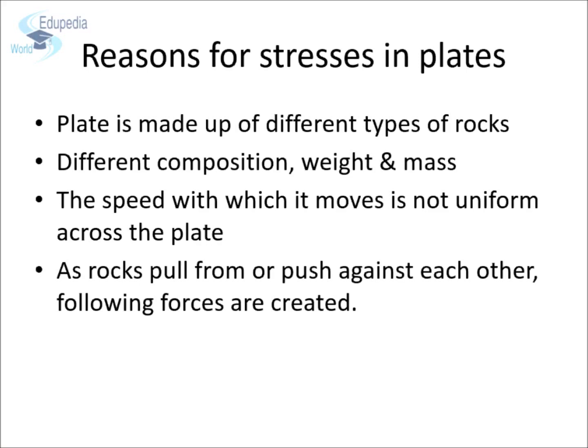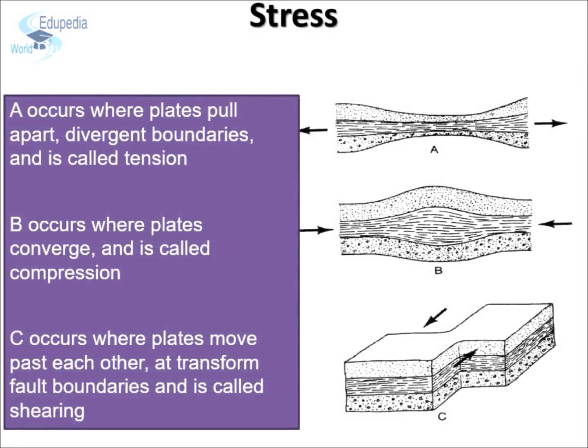Rocks can undergo different types of stresses. The first is tension. Rocks that are being pulled apart are under tension. Tension causes rocks to lengthen or break apart. Tension is the major type of stress found at divergent plate boundaries. The second is compression. Compression is the stress that squeezes rocks together. Compression causes rocks to fold or fracture, similar to how colliding cars crumple. Compression is the most common stress at convergent plate boundaries.